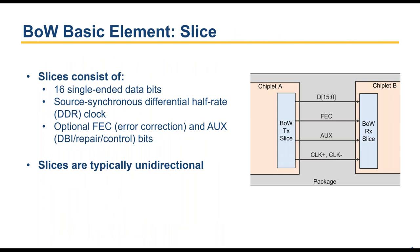Inside BOW, the most basic element is what the standard defines as a slice. Slices consist of 16 single-ended data bits and a source-synchronous differential half-rate clock — half-rate being equivalent to DDR. Optionally, slices can include a forward error correction bit and an auxiliary bit. The FEC would be used by the link layer above for out-of-band error correction, while the AUX bit can be used as desired — for example, for DBI signaling.